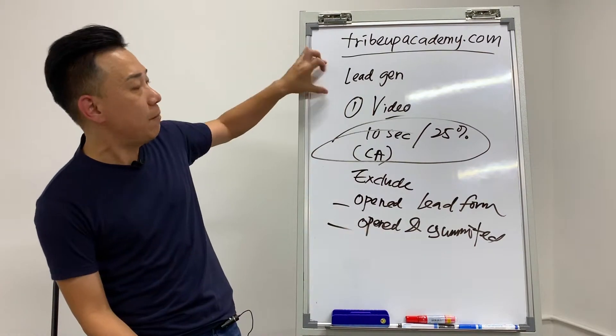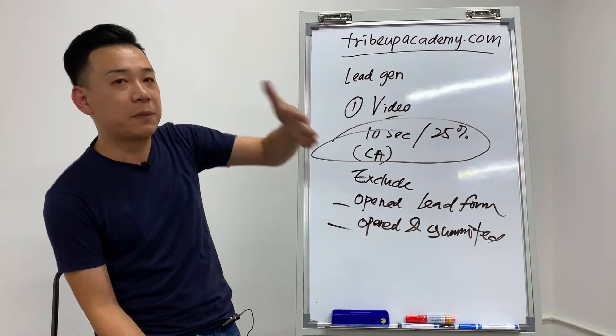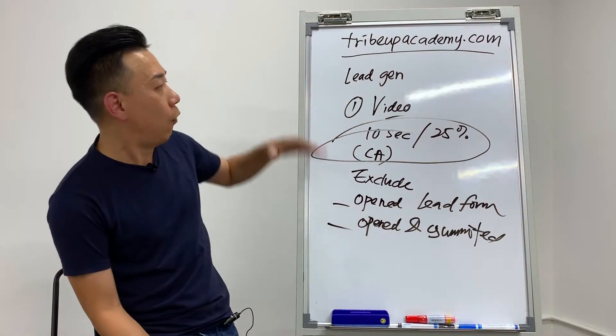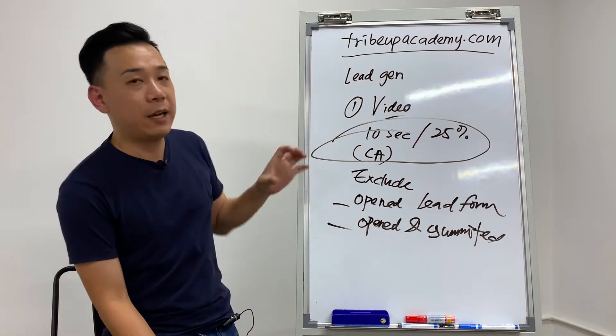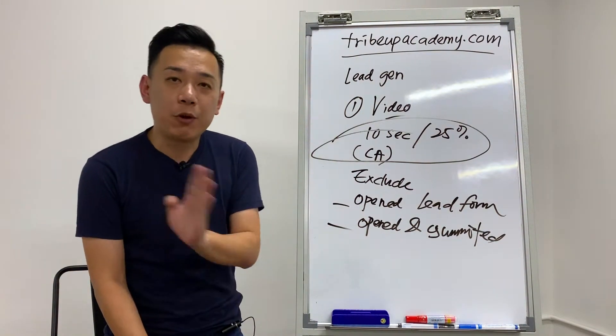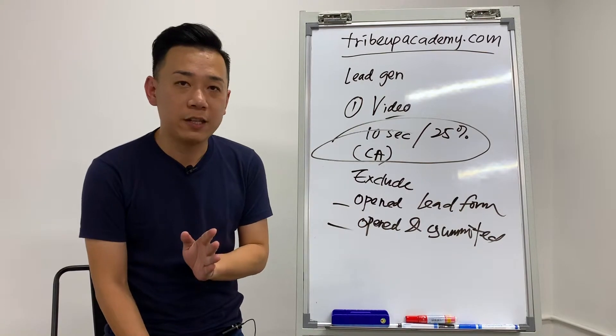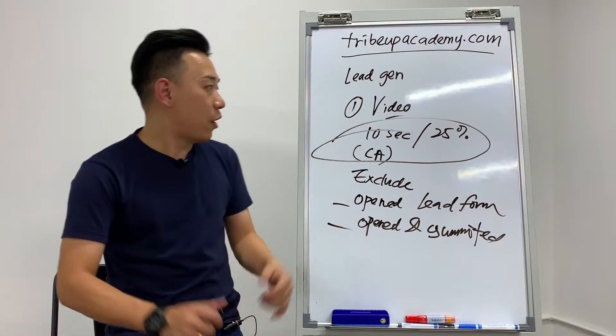If you have a larger audience and then you want to make sure that at the same time using the lead gen which is optimizing for the result that you're looking for, at the same time you want to make sure that your ads or your campaign are always reaching to the fresh audience, this is the method.